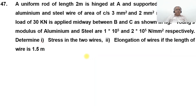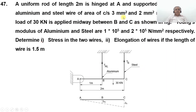We are going to take up problem number 47. A uniform rod of length 2 meters is hinged at A and supported at B and C by aluminium and steel wire of area of cross-section 3 mm² and 2 mm² respectively. A load of 30 kN is applied midway between B and C. Young's modulus of aluminium and steel are 1×10⁵ and 2×10⁵ N/mm² respectively. Determine stress in the two wires and elongation of wires if the length of wire is 1.5 meters.